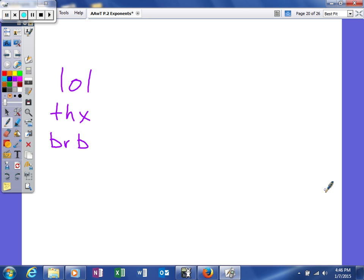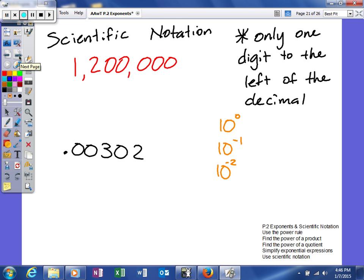Scientific notation for us is basically our ability to get across numbers that are really large or really small in a very concise manner that's still accurate. So, there is one rule for scientific notation, and you do need to know it: only one digit to the left of the decimal to be correctly written in scientific notation. If you have more than one number to the left of the decimal, then you're not written correctly in scientific notation.